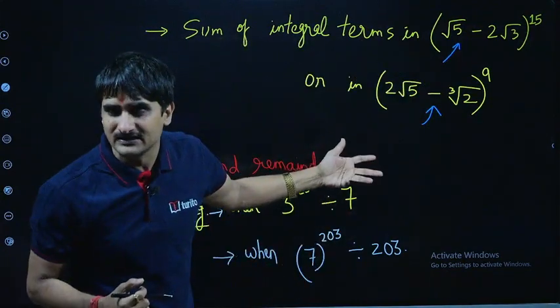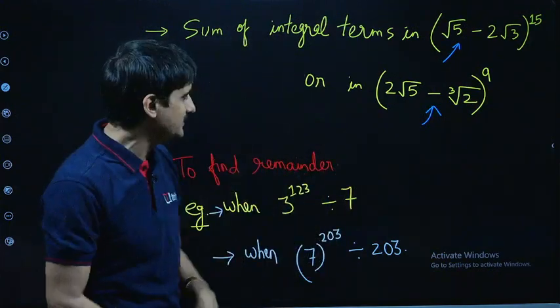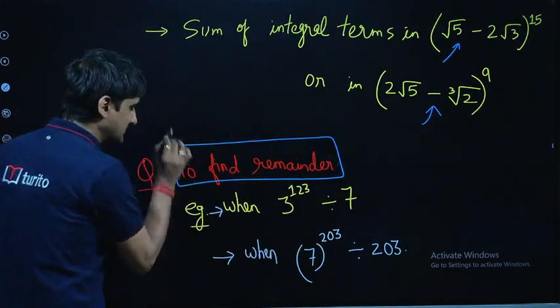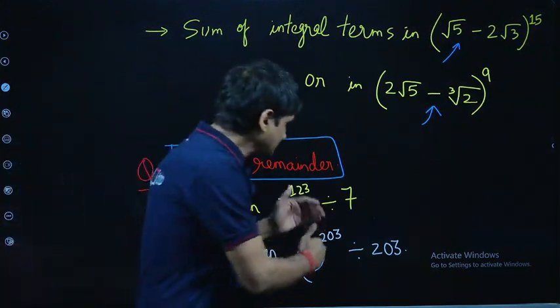the sum of rational terms, irrational terms in the expansion - again an important point. And then of course to find the remainder, I just mention two examples here. You should be able to solve such type of questions using binomial expansion. That's again an important aspect.